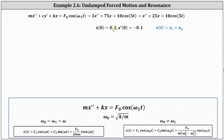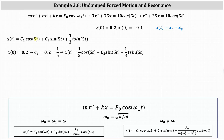Beginning with x(0) = 0.2, we substitute t = 0 and set the function equal to 0.2. Substituting zero for t, we get c₁ times cos(0), which gives c₁. The next two terms involve sine, and sin(0) = 0, so those terms drop out, giving c₁ = 0.2 = 1/5. Substituting 1/5 for c₁, we have x(t) = (1/5) cos(5t) + c₂ sin(5t) + (1/3)t sin(5t).